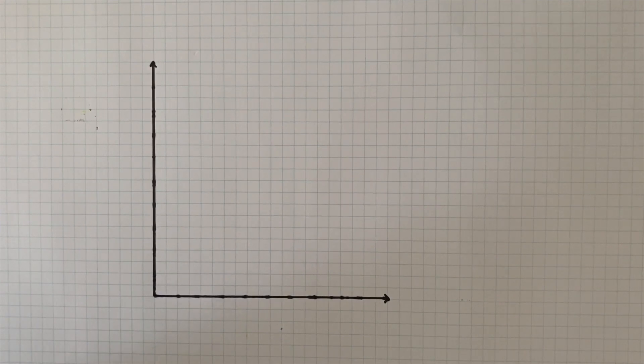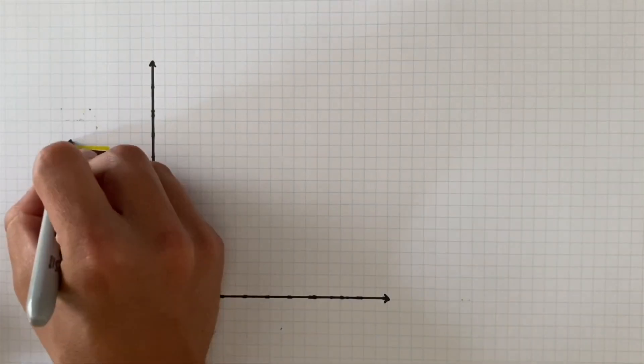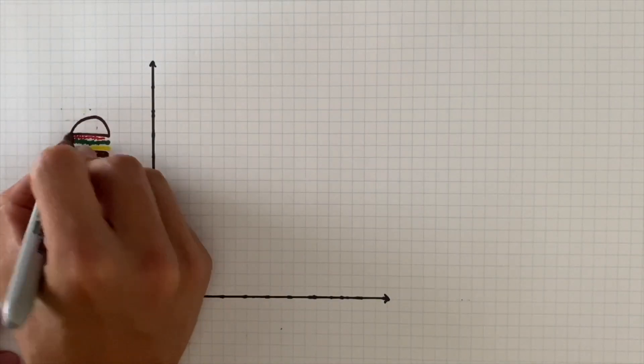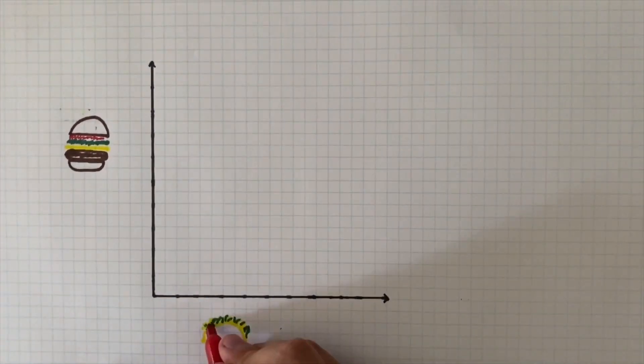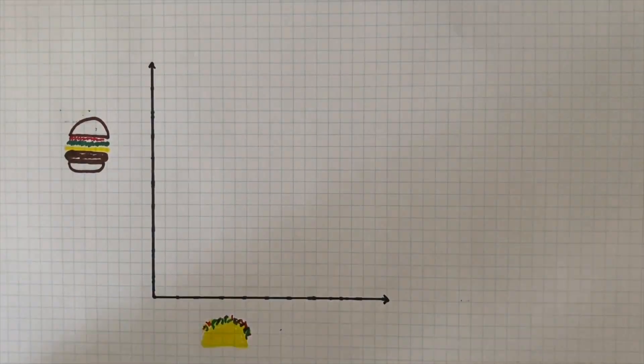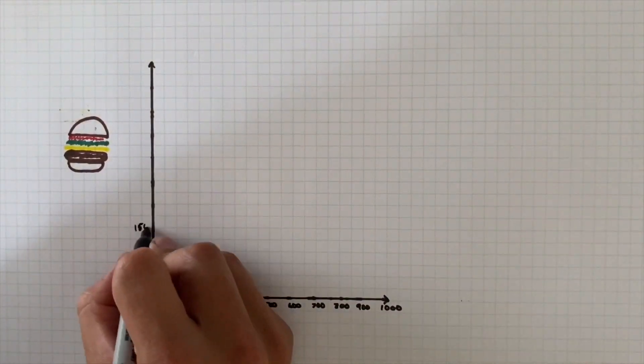So our production possibilities curve is going to be illustrated by taking the two goods and then placing them on the axes. So one of the goods will be on the vertical, another on the horizontal. So let's go for this example with hamburgers on the vertical axis and tacos on the horizontal. Then we're going to add number lines to each axis. Now this is going to be made up. I'm not going off of anything real life here.